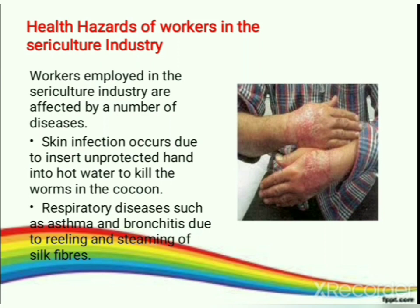Now, let's look at the workers' health — what has affected their health in the sericulture industry. Workers employed in the sericulture industry are affected by a number of diseases. First, skin infection — due to inserting unprotected hands into hot water to kill the worms in the cocoon. Second, respiratory diseases such as asthma and bronchitis, due to reeling and steaming of silk fiber.